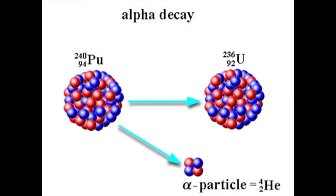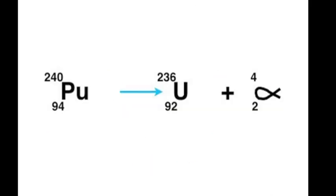Large atoms can reduce their size and slightly increase the ratio of neutrons to protons by emitting an alpha particle. An alpha particle is essentially a fast-moving helium nucleus consisting of two protons and two neutrons. Taking this example of plutonium decaying to form uranium, if we write the equation out in linear format, then notice that the equation is balanced.